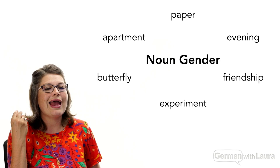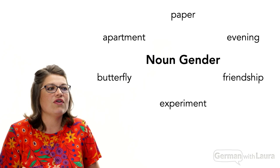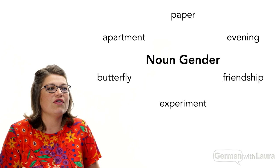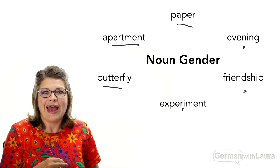It starts to get a little weird again, because in German all nouns have gender — not just people, but everything. Concrete nouns such as butterfly, apartment, and paper — things that you can see, touch, taste, smell — and also abstract nouns like evening, friendship, experiment: all of these nouns in German have gender. They're either masculine, feminine, neuter, or we could put them in their plural forms. It's tempting to think there's some quality of these nouns that makes them masculine, feminine, or neuter — but that's not how it works.